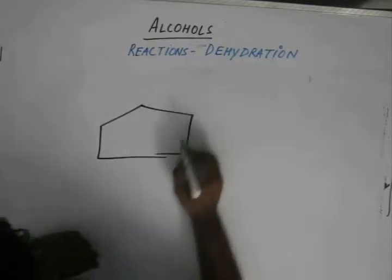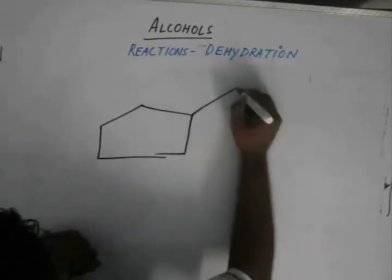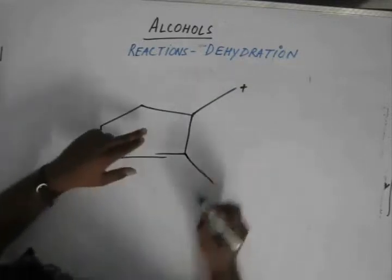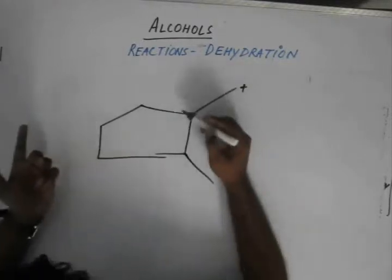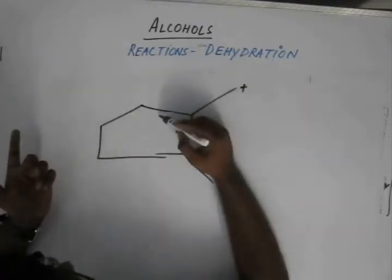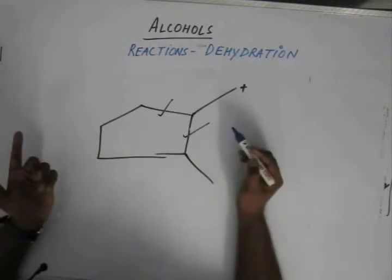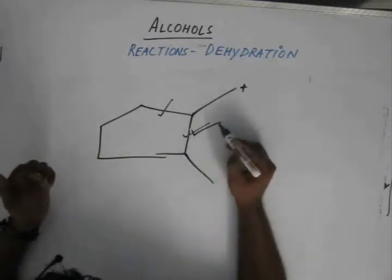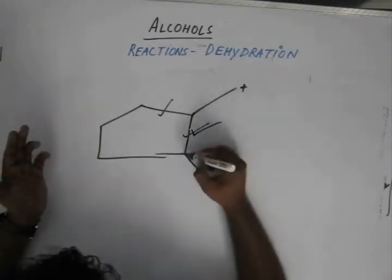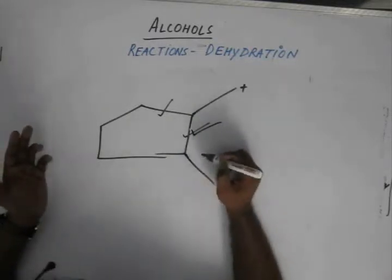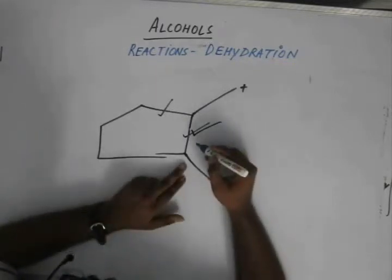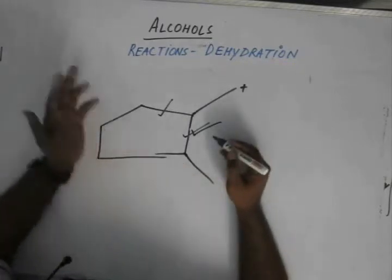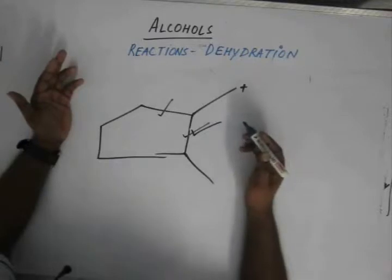For you to understand from which carbon the ring expansion was going to take place — the doubt was between this bond and this bond. I chose this bond because the migratory aptitude of a tertiary carbon was more than that of a secondary carbon.